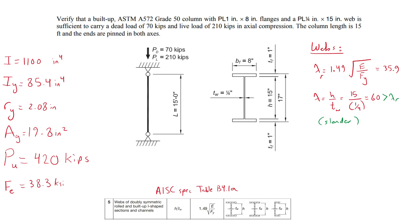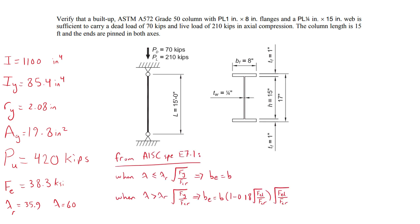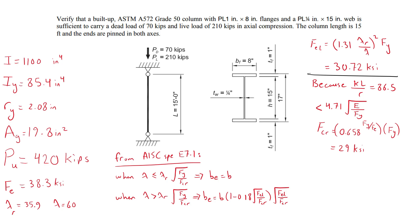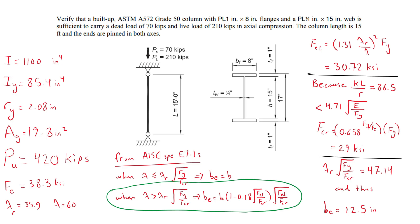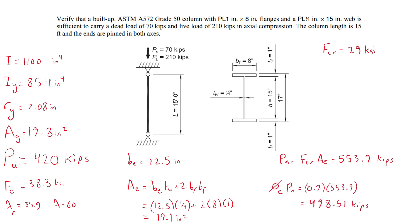The slender web is accounted for by reducing the gross area to an effective area Ae. Using AISC equation E7-1, we first calculate the elastic local buckling stress and the critical stress to evaluate the condition. Because the width-to-thickness ratio exceeds the computed threshold, we use the second expression to find the effective width of the web. The effective area is then the effective web area plus the flange areas, allowing us to calculate the nominal strength and, consequently, the final compressive strength of the column, which exceeds the ultimate compressive load and is therefore sufficient.